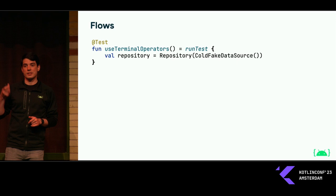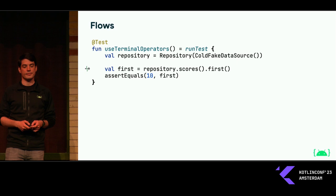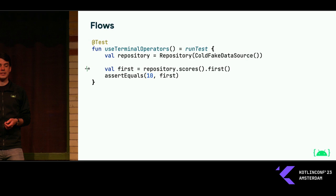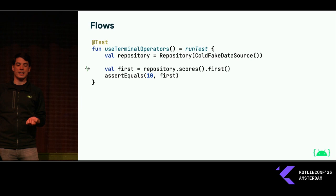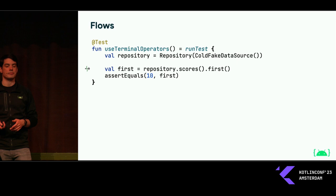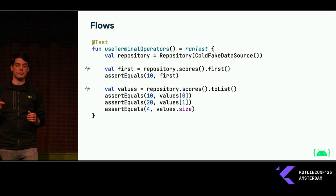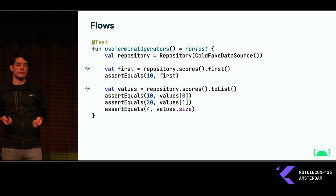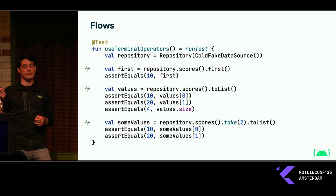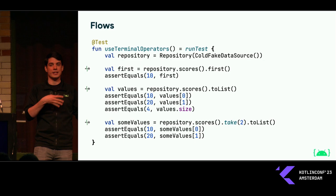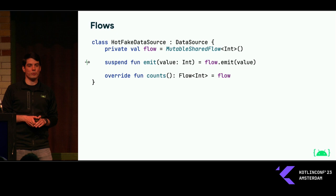Testing this, we go to a test method using runTest, create the repository passing in our fake data source. From here, I can use various terminal operators on flows to grab values out of the flow the repository exposes. For example, I can call first on it to collect just the first value and assert that the one the data source produced has been multiplied by 10. Or I can collect all values from the flow into a list — assuming the flow is finite — and then make assertions on individual values or the size of the list. And in cases where I don't want to collect all values, or the flow isn't finite, I can use flow operators like take to grab just the first two values, collect those into a list, and make assertions.